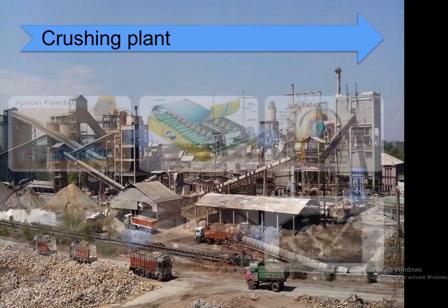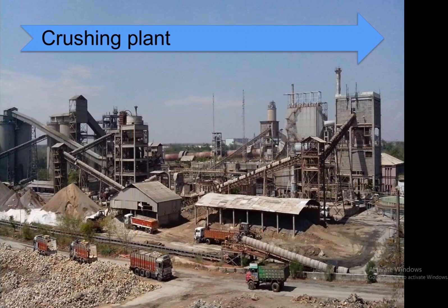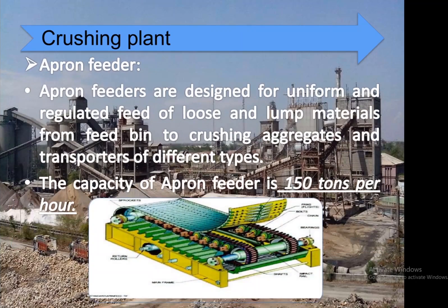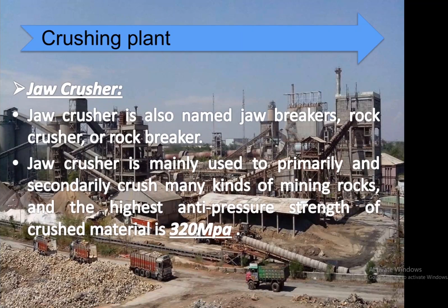Apron feeders are designed for uniform and regulated feed of loose and lump materials from a feed bin to crushing aggregates and transporters of different types. The capacity of the apron feeder is approximately 150 tons per hour.